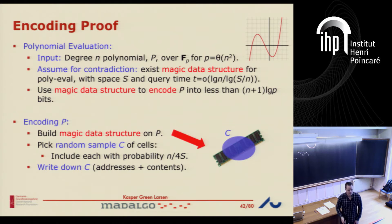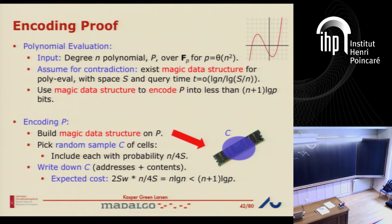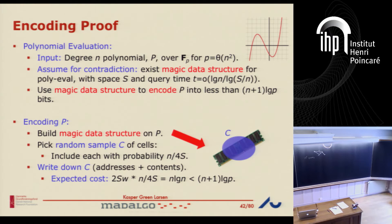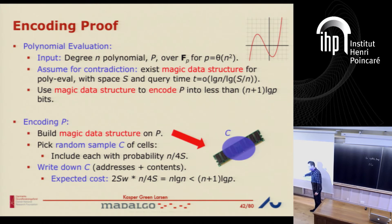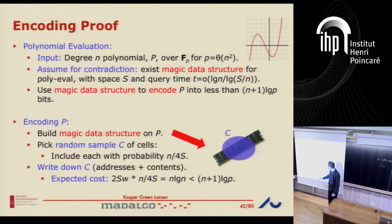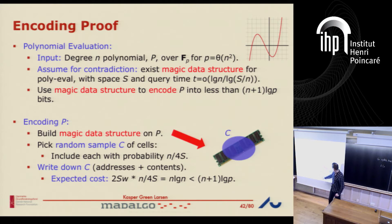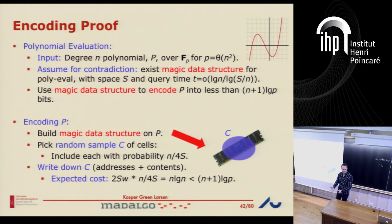How much does this cost? In expectation — this is where I'm cheating a bit because it's not a worst-case thing — I had s cells, I sample each with probability n over 4s. When I write down one of them, the contents is w bits and the address is log s bits. Assuming the word size is enough to hold an address, it's at most 2w bits to write down the contents and the address. I chose n over 4s so this is smaller than n log p — I get less than the number of bits needed to represent every polynomial uniquely. Essentially this is n log n bits, and p is n squared, so it has to take at least 2n log n bits. So I'm below the number of bits needed on average.